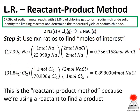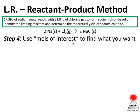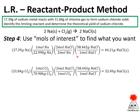Step four: use the moles of interest to find what you want. In this case we want the theoretical yield of sodium chloride in grams. So we take the moles of sodium chloride and multiply by the molar mass of sodium chloride to get grams of NaCl. We can do the same thing starting from chlorine — carrying it all the way through to get the mass of sodium chloride.